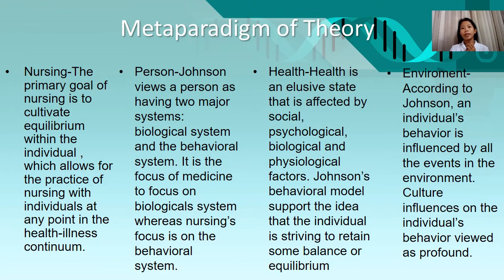Meta-paradigm of the theory. Nursing: the primary goal of nursing is to cultivate equilibrium within the individual, which allows for the practice of nursing with individuals at any point in the health-illness continuum. Person: Johnson views a person as having two major systems — the biological system and the behavioral system. Medicine focuses on the biological system, whereas nursing's focus is on the behavioral system. Health: health is an elusive state affected by social, psychological, biological, and physiological factors; Johnson's behavioral model supports the idea that the individual is striving to retain balance or equilibrium. Environment: an individual's behavior is influenced by all events in the environment, and cultural influences on the individual's behavior are viewed as profound.